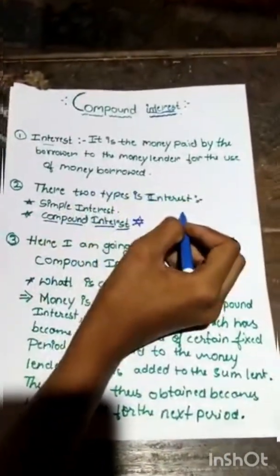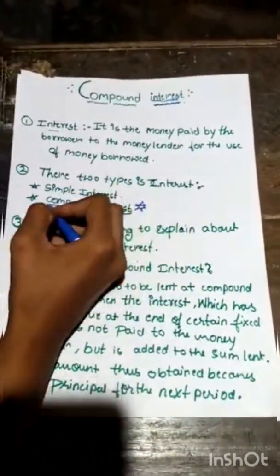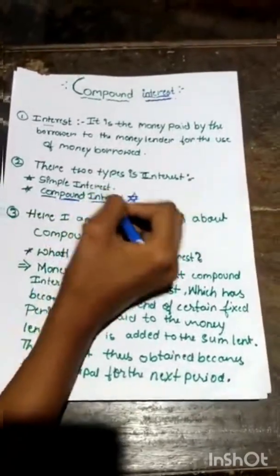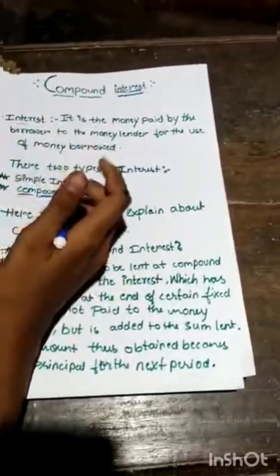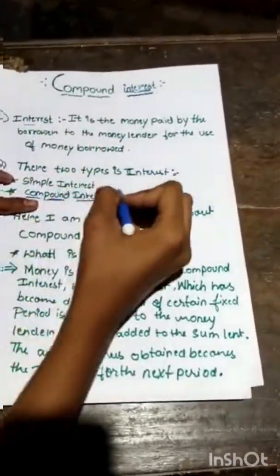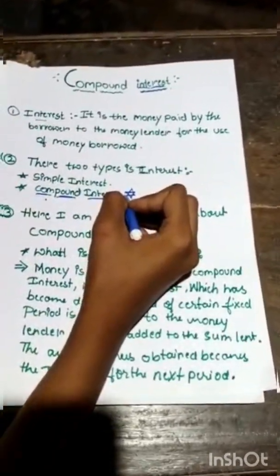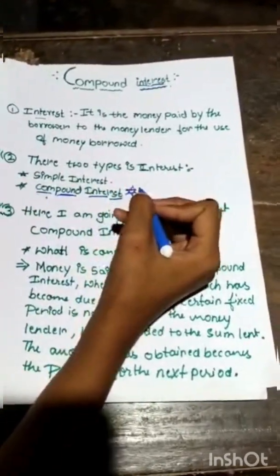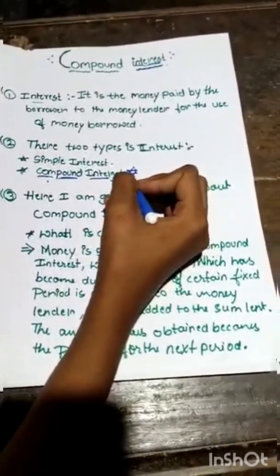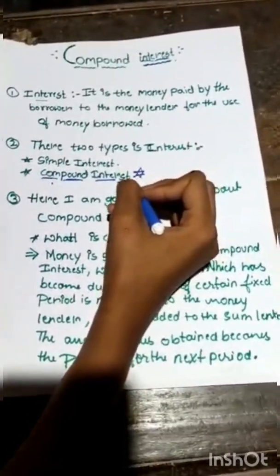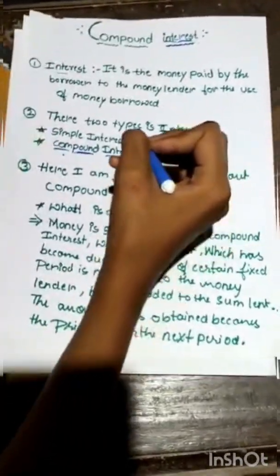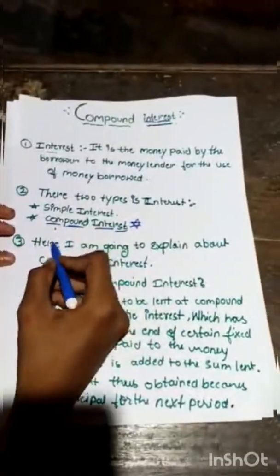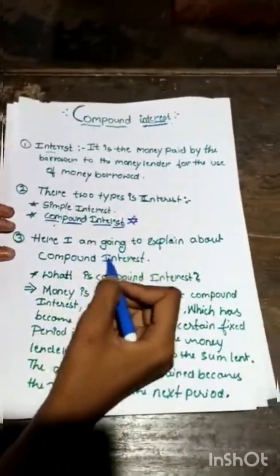Now, there are two types of interest. One is simple interest and one is compound interest. Here, I am going to explain about compound interest because I want to tell you many things about how to solve using the formula.